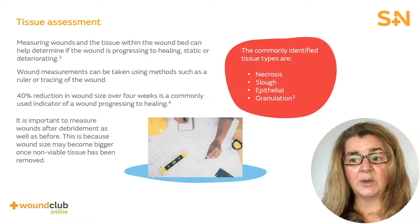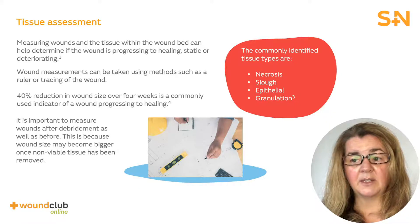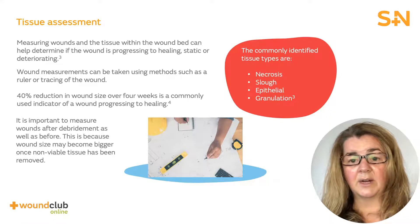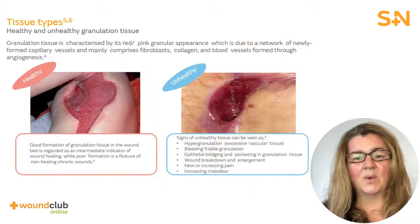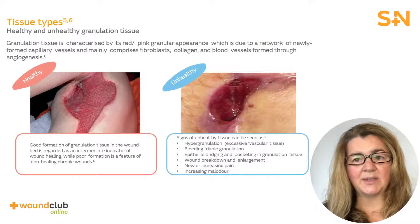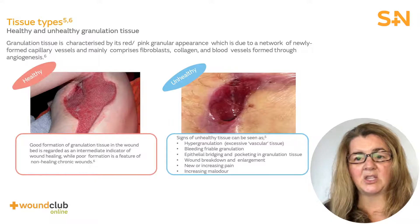For example, new and healthy epithelial or granulating tissue can help confirm if the wound is healing, whereas an increase in necrotic or sloughy tissue can suggest the wound is deteriorating. Whilst the presence of granulating tissue suggests a healing wound, it's important to note that it can be an indication of either healthy or unhealthy soft tissue repair.